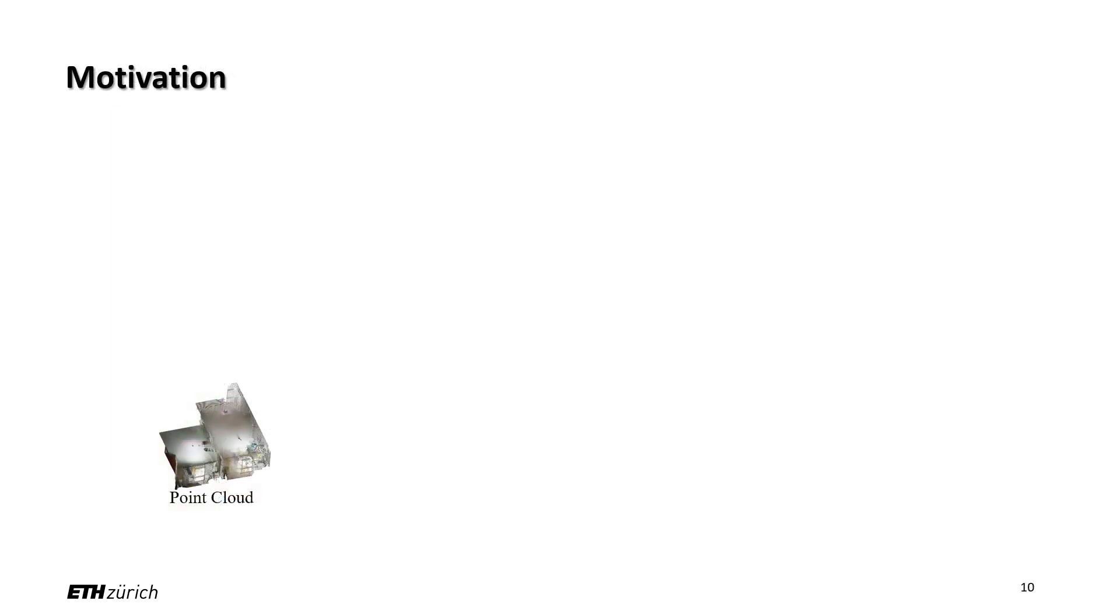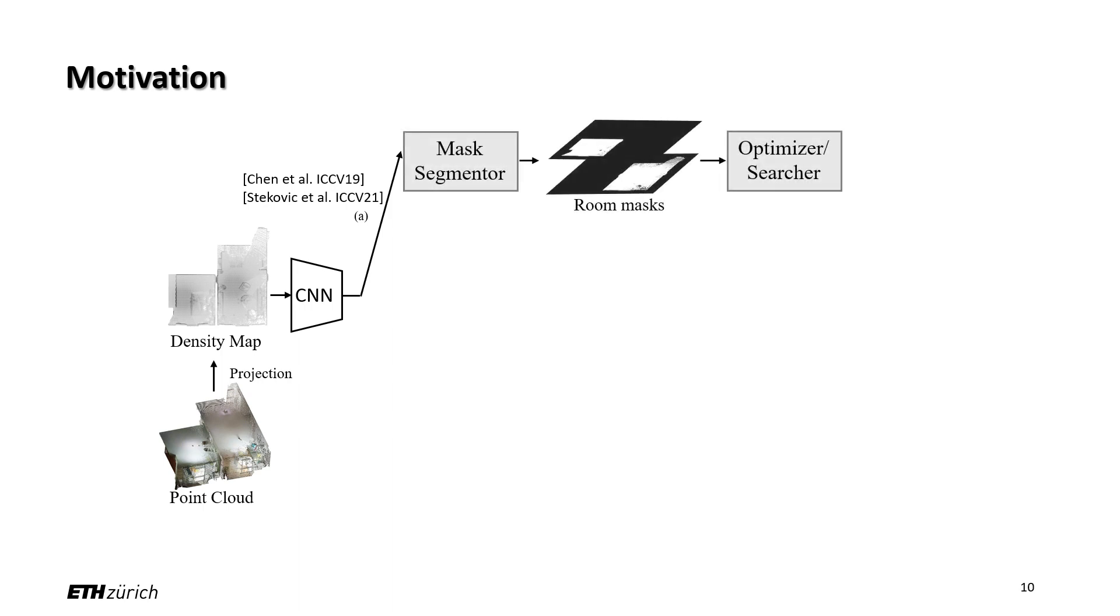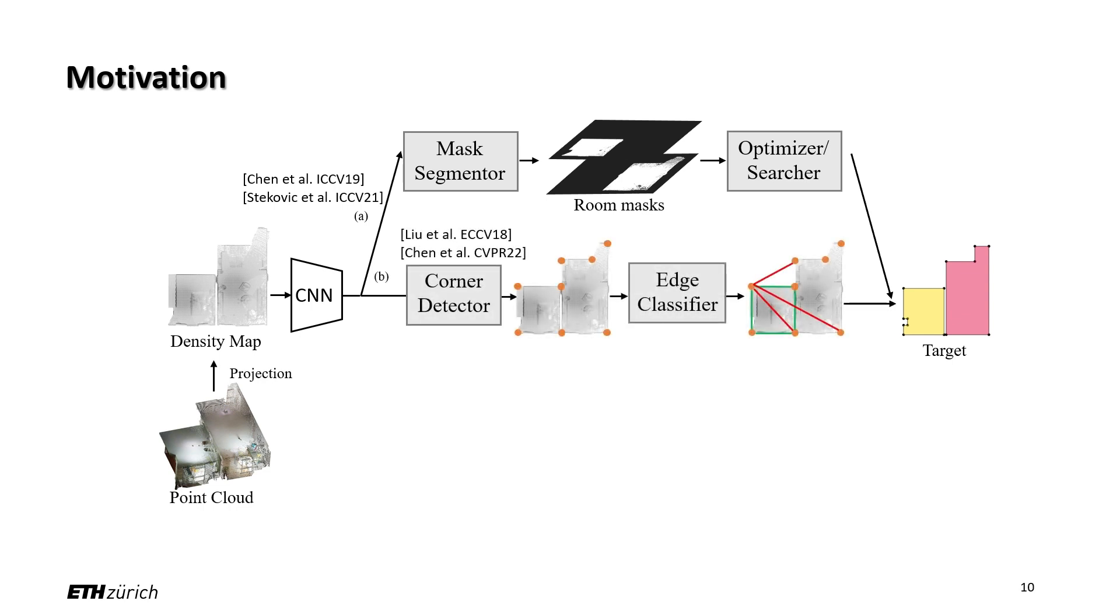Following previous works, we first project the point cloud to a bird's eye view density map. State-of-the-art can be split into two categories. Top-down methods first extract room masks, then employ handcrafted optimization or search techniques to extract a polygonal floor plan. Alternatively, bottom-up methods first detect corners, then look for edges between them, and finally assemble edges into a planar floor plan graph.